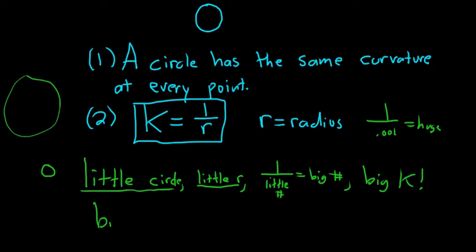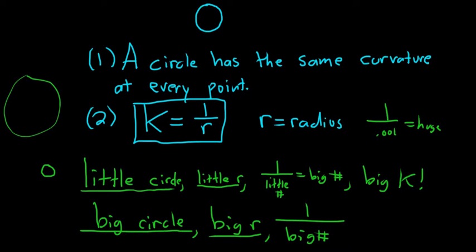If you have a big circle, you have a big R. So you have 1 over a big number, like 1 over 50, 1 over 1,000. This is a little number. So if you have a big circle, you have a big R, so you have 1 over a big number that gives you a little number. So that means you have a little K.